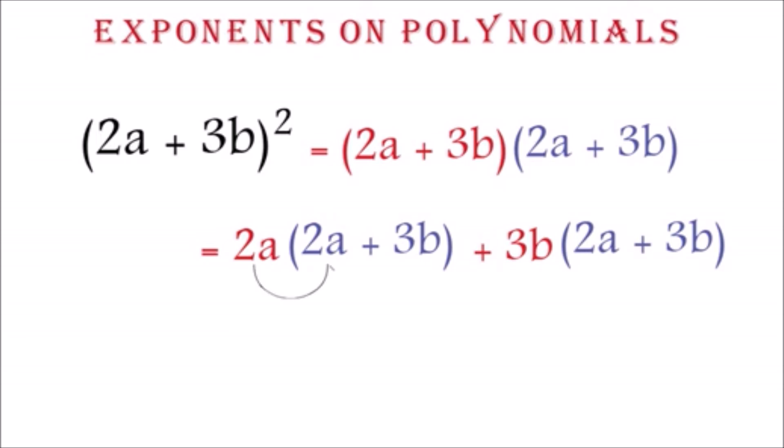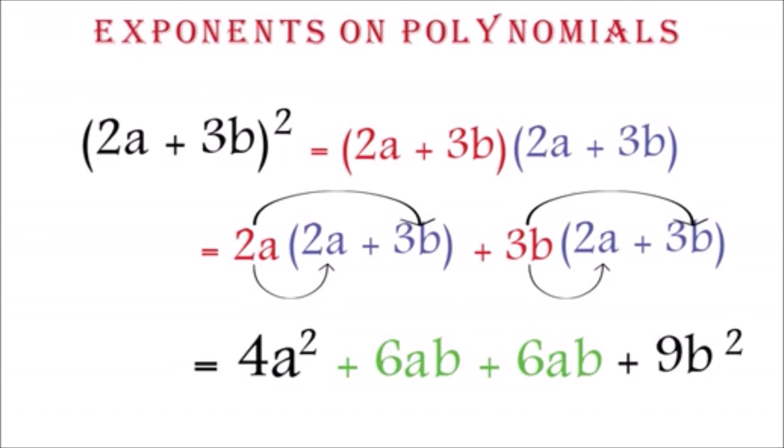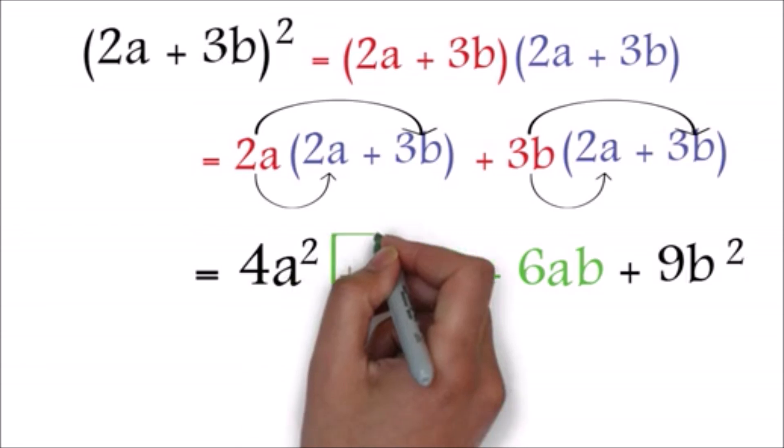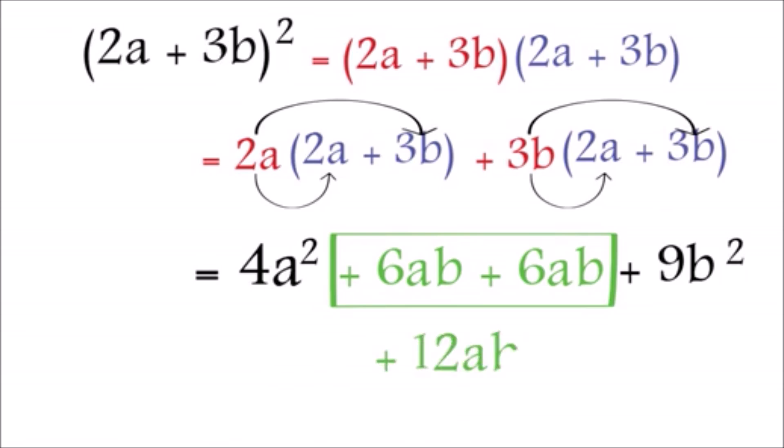We have 2a by 2a to get 4a squared. Then, 2a by 3b to get 6ab. Next, we have 3b by 2a to get 6ab. Then, we have 3b by 3b to get 9b squared.